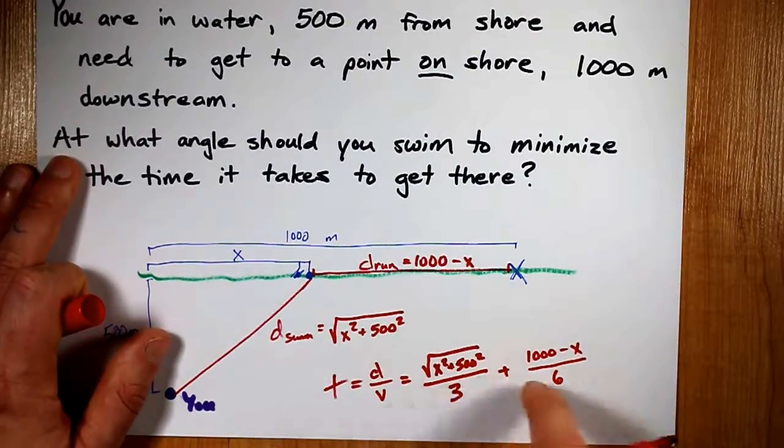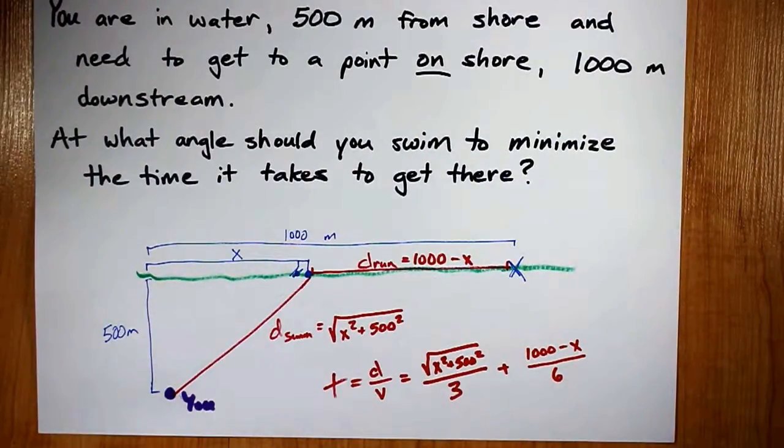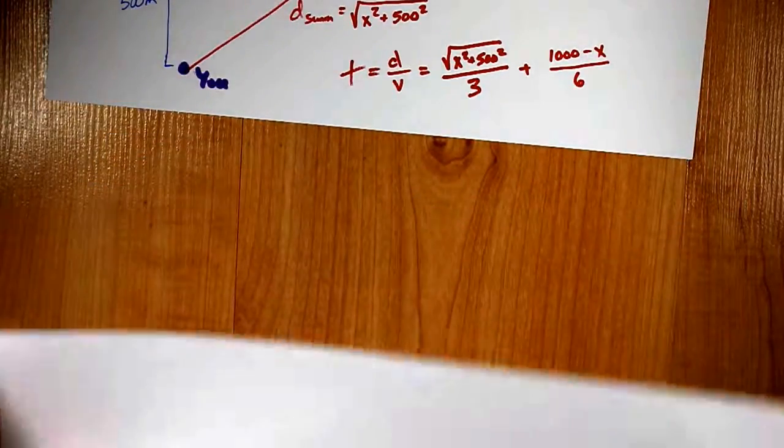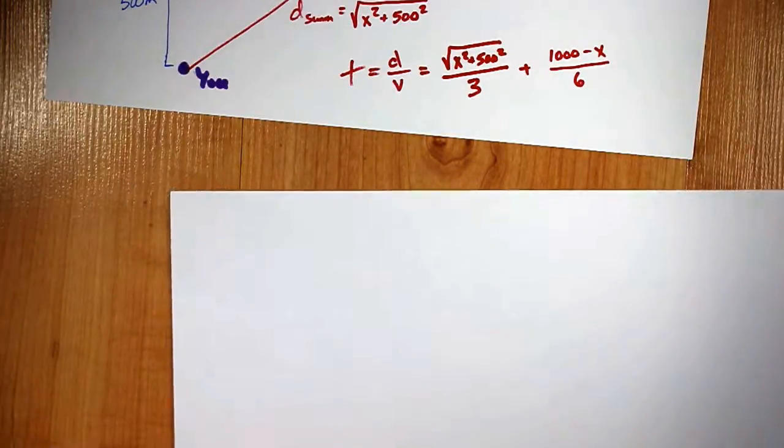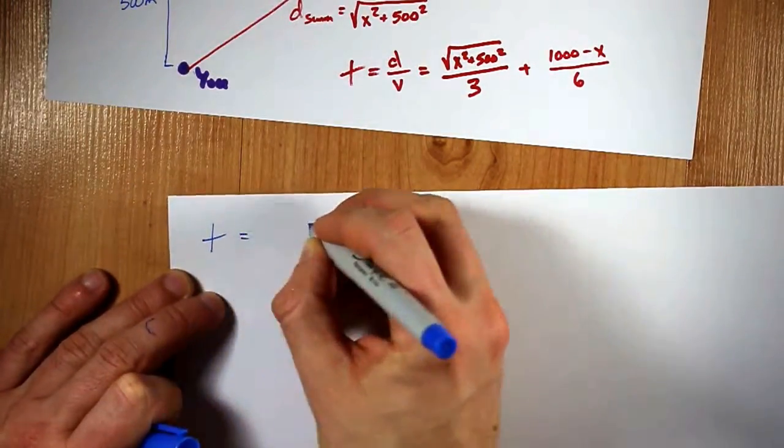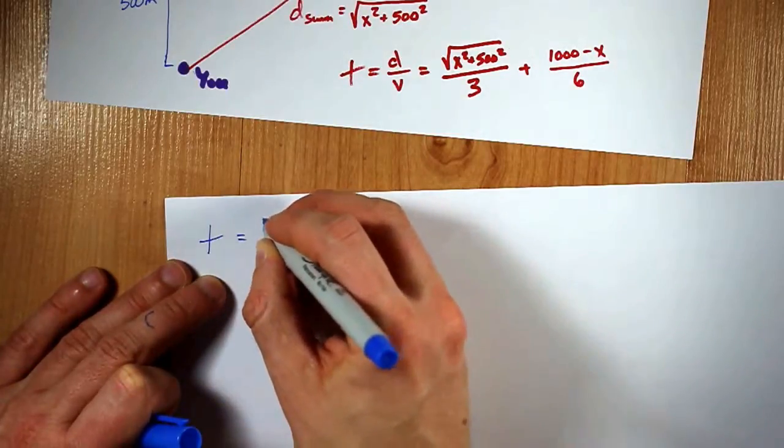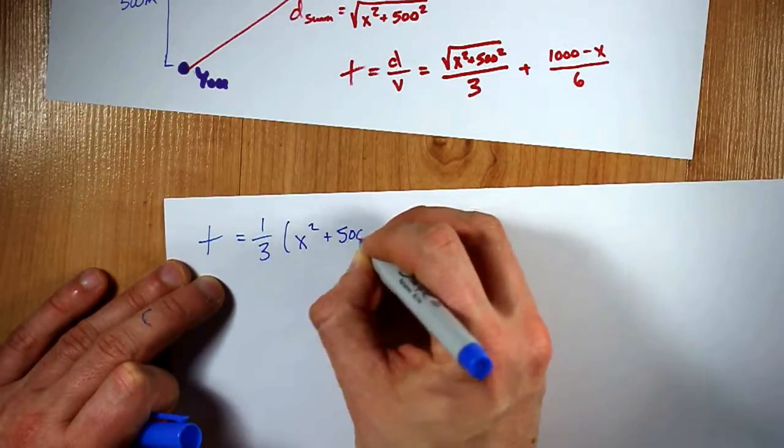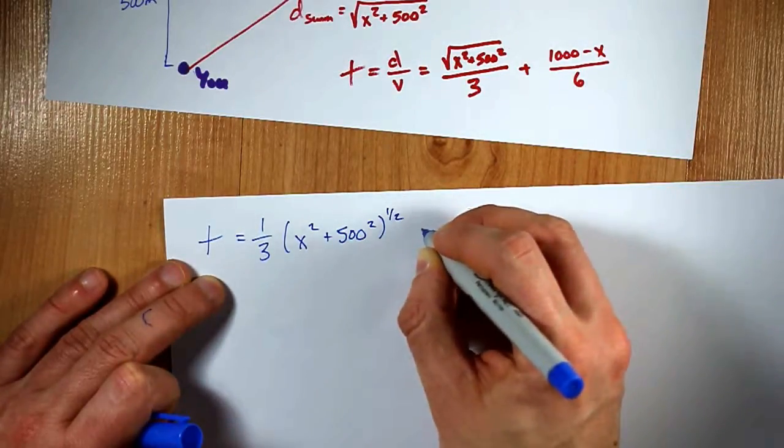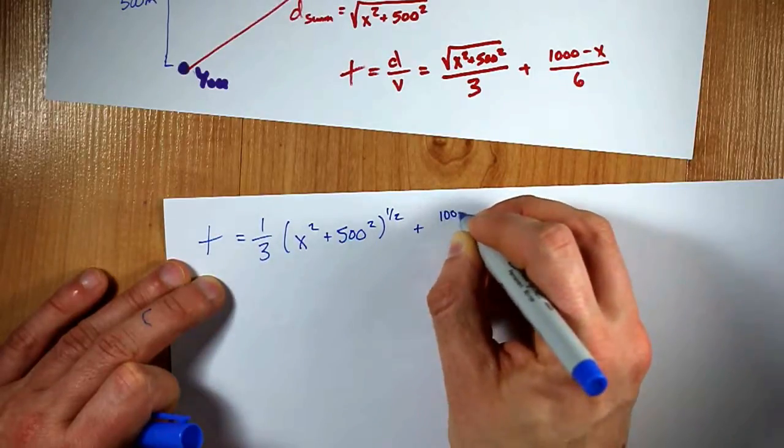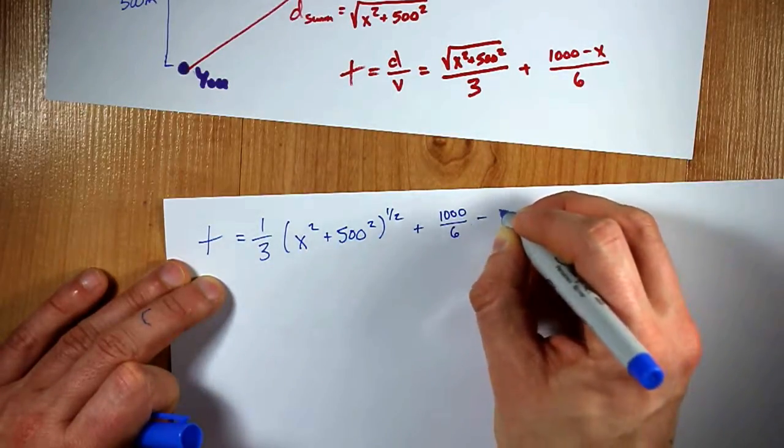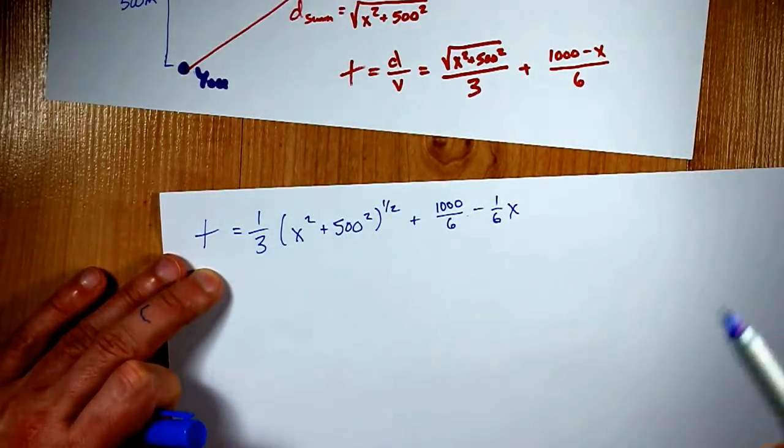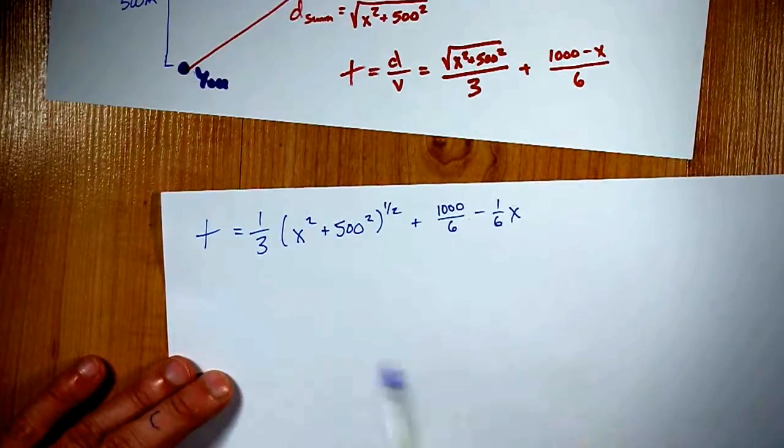And to minimize time, we can take the derivative of this with respect to x. Let's do that together. I'm just going to have to rewrite it for myself here. That was nothing. Time equals... It seems to me it's one-third x squared plus 500 squared, all to the power of a half, plus 1000 over 6 minus a sixth of x. I've cleaned this up a little so that it's easier to take the derivative of.